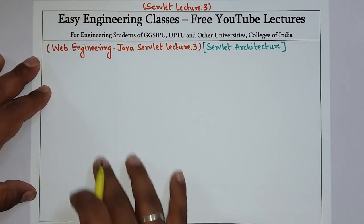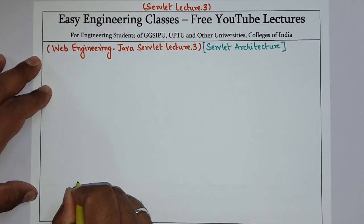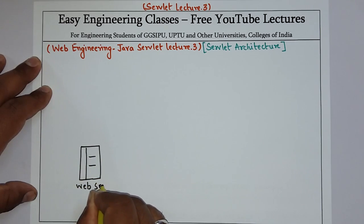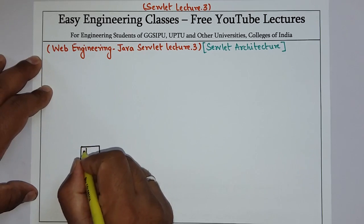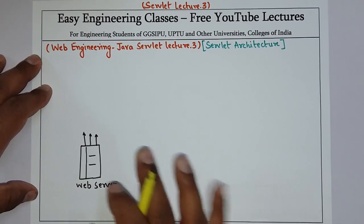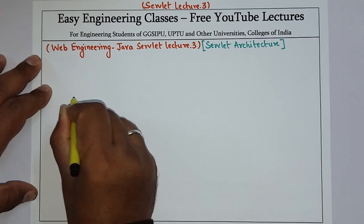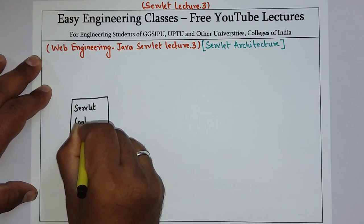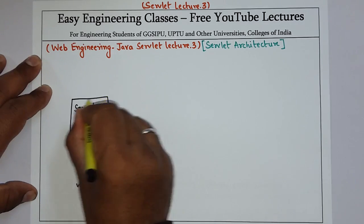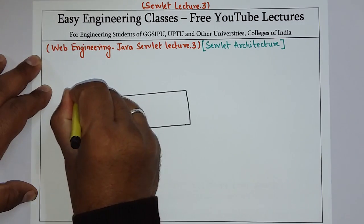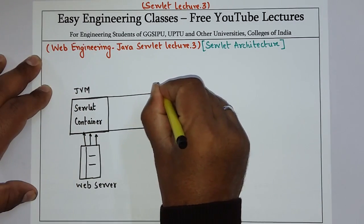We will create a servlet architecture and then discuss it. Suppose this is your web server — this is the web server — and that web server is calling the servlet container, which is your servlet part. So this is the servlet container.